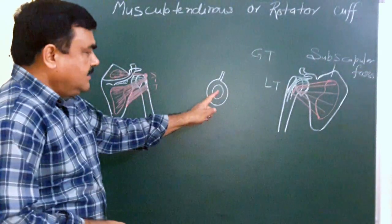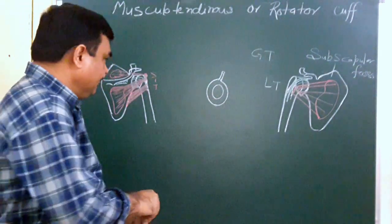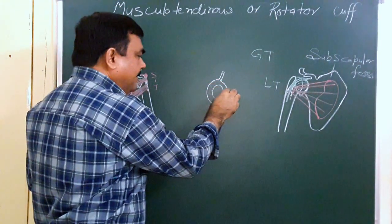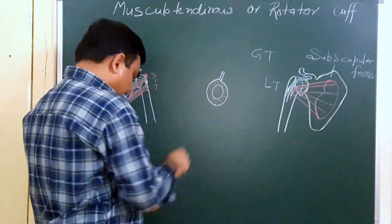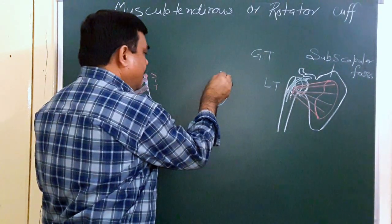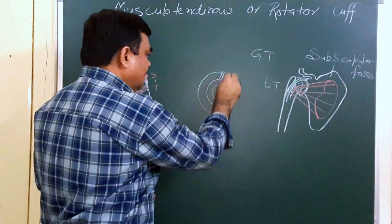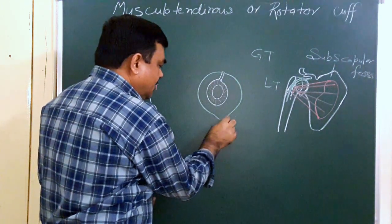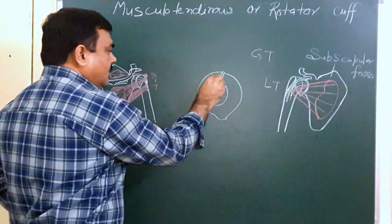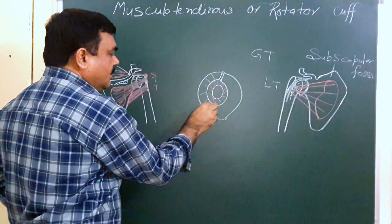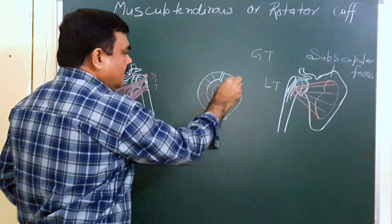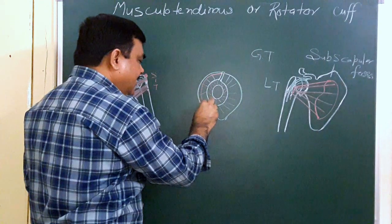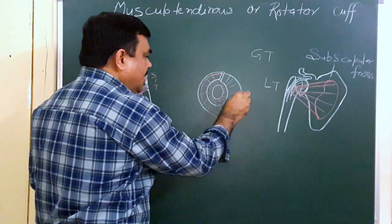This is the glenoid cavity and this is the glenoid labrum. Here is the capsule of the shoulder joint. This capsule is internally lined by the synovial membrane.